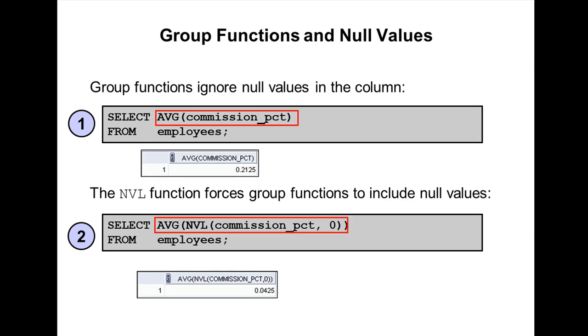Now I'm going to explain the average function. Before that, I want to tell you that all group functions ignore null values in the column. Make a note of this: all group functions ignore null values in the column, except COUNT(*). Remaining all functions ignore null values in the column.